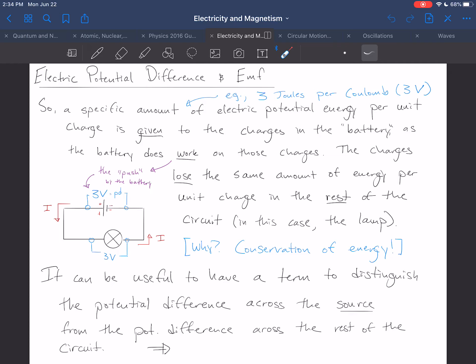Now here's the problem. That potential difference, so the electric potential per unit charge that's given to the charges here, is the same amount that is released here. And so, we want to have a term, a useful term, to distinguish the potential difference across the source, this is the source of the energy, from the potential difference across the rest of the circuit.